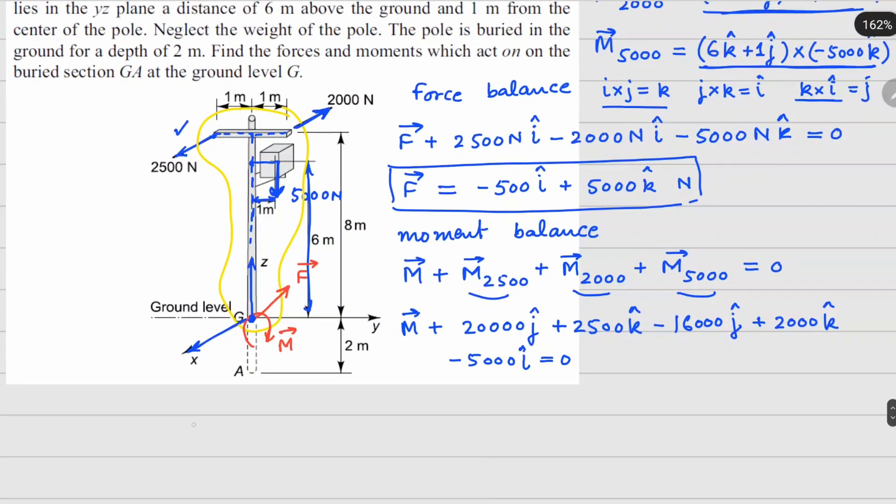So now if you combine everything, m j cap is here and here. So 20,000 minus 16,000. So it becomes plus 4000 j cap. These two will combine together. So it's going to be 4500 k cap and minus 5000 i cap equals to 0.